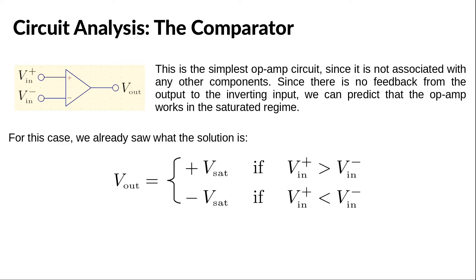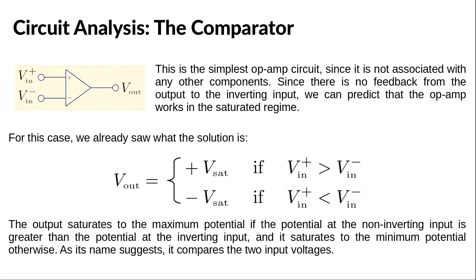The op-amp saturates and the output voltage is positive if the non-inverting input voltage is greater than the inverting input voltage, negative otherwise. So, as its name suggests, this circuit compares the two input voltages and tells us which one is greater.